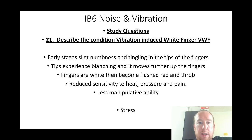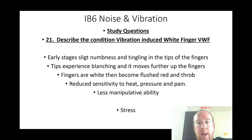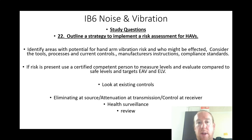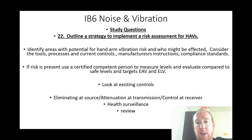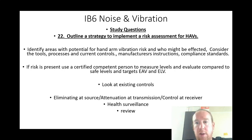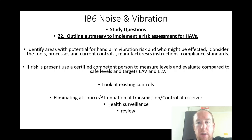Describe white finger: early stages involve slight numbness and tingling at the fingertips, blanching moving further up the fingers — fingers turn white, then become flushed red and throb, with reduced sensitivity to heat, pressure, and pain, and less manipulative ability. Outline a strategy to implement risk assessments for HAVs: identify areas with potential hand-arm vibration risk and who might be affected; consider tools, processes, and current controls; use manufacturer's instructions, compliance, and standards.